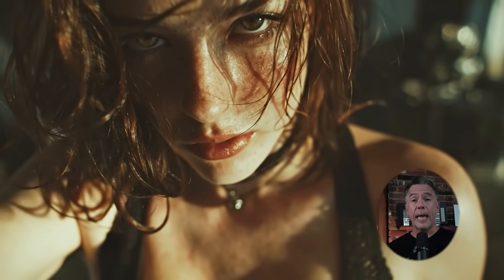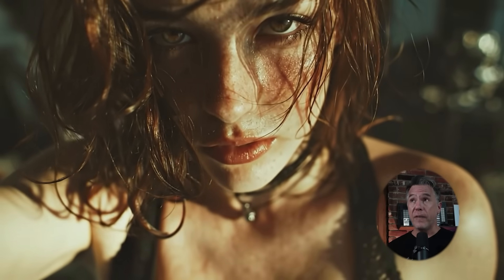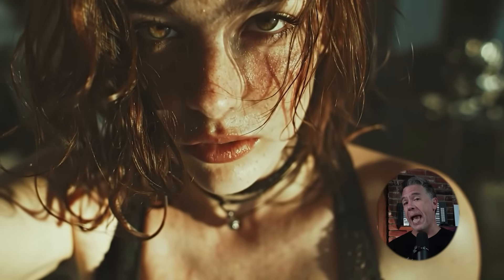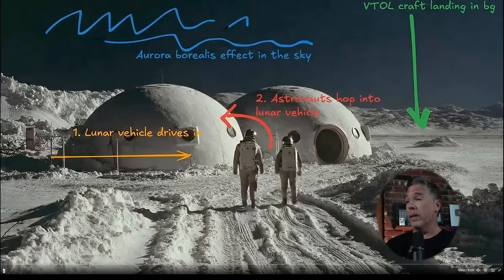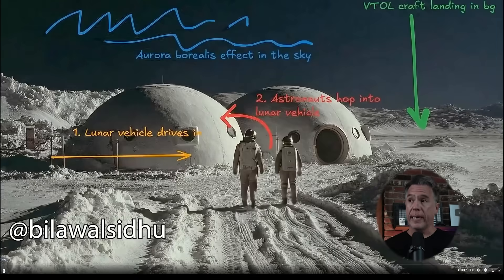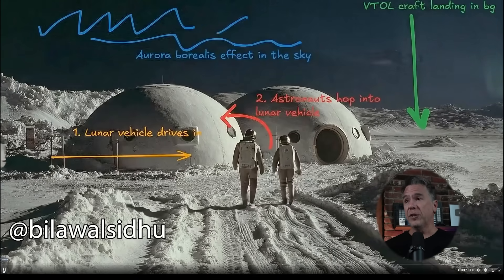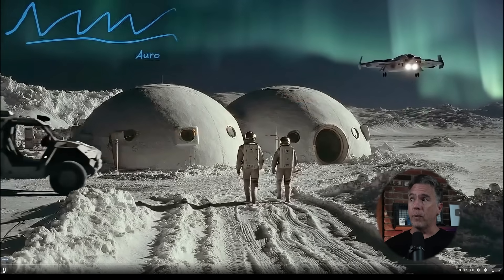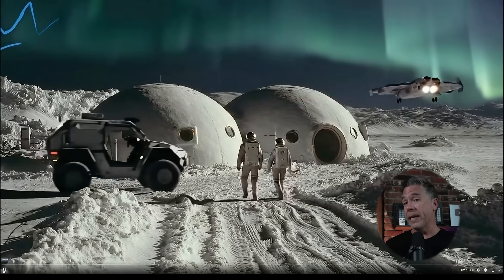Hey everyone, today we're taking a look at a new VO3 hack. It's kind of an interesting one — kind of visual prompting. So what does that mean exactly? Well, it means you can write and scribble all over your input image and have VO3 animate it. So does that provide any advantage over text prompting? Today we're going to dive in to find out.